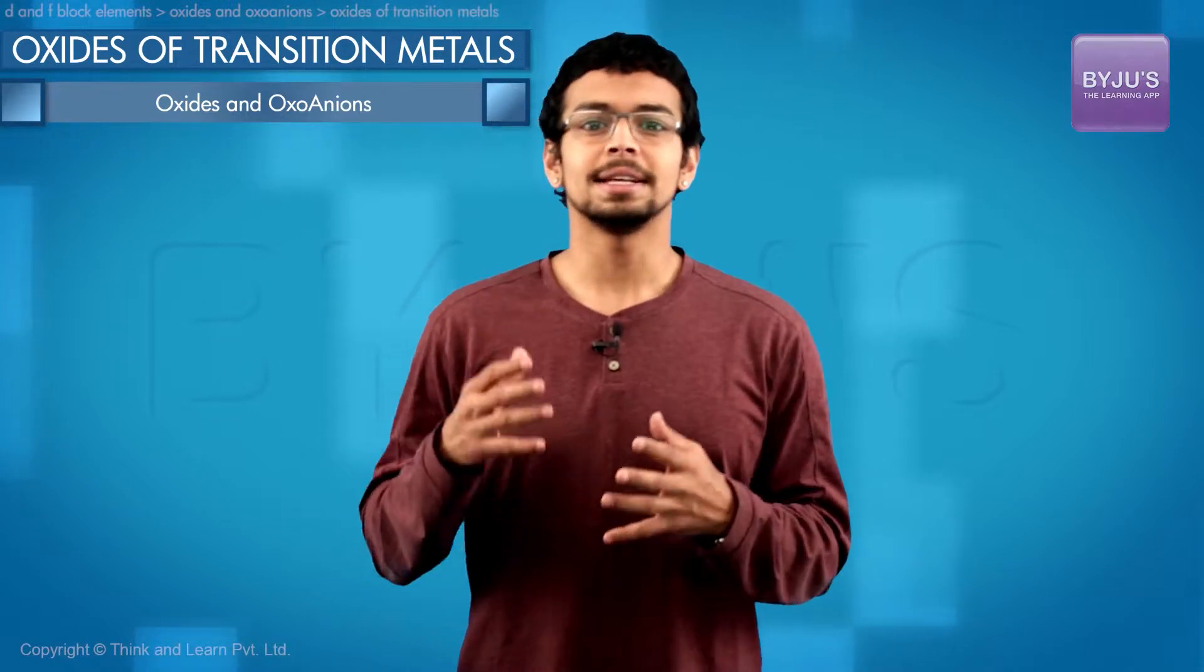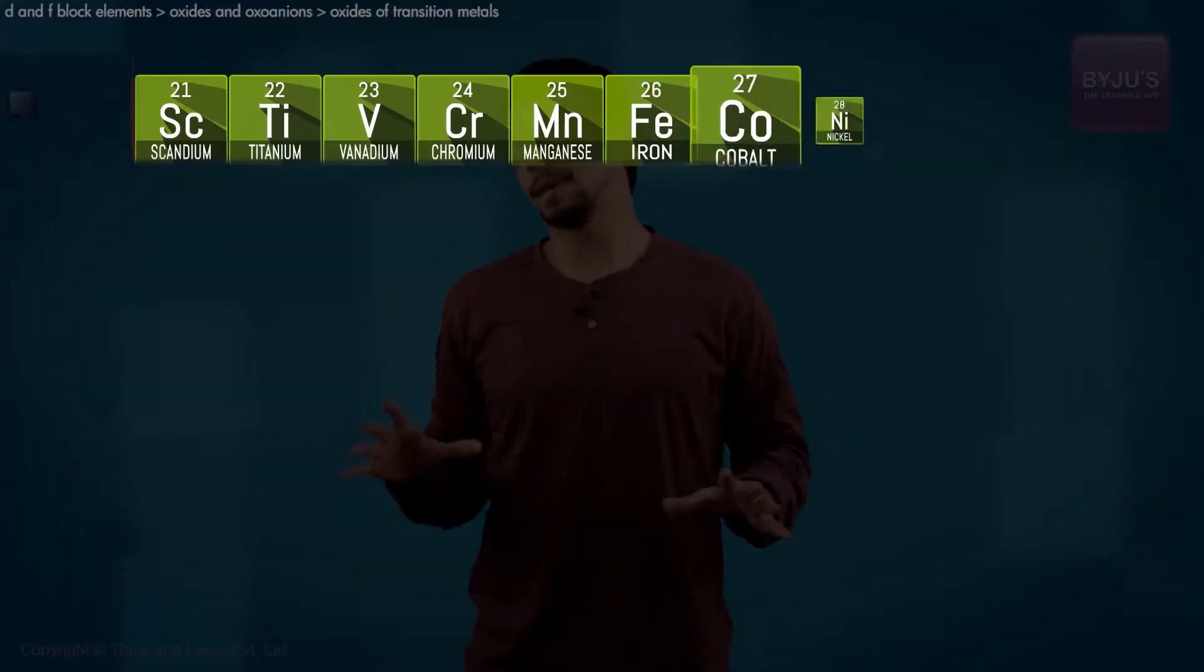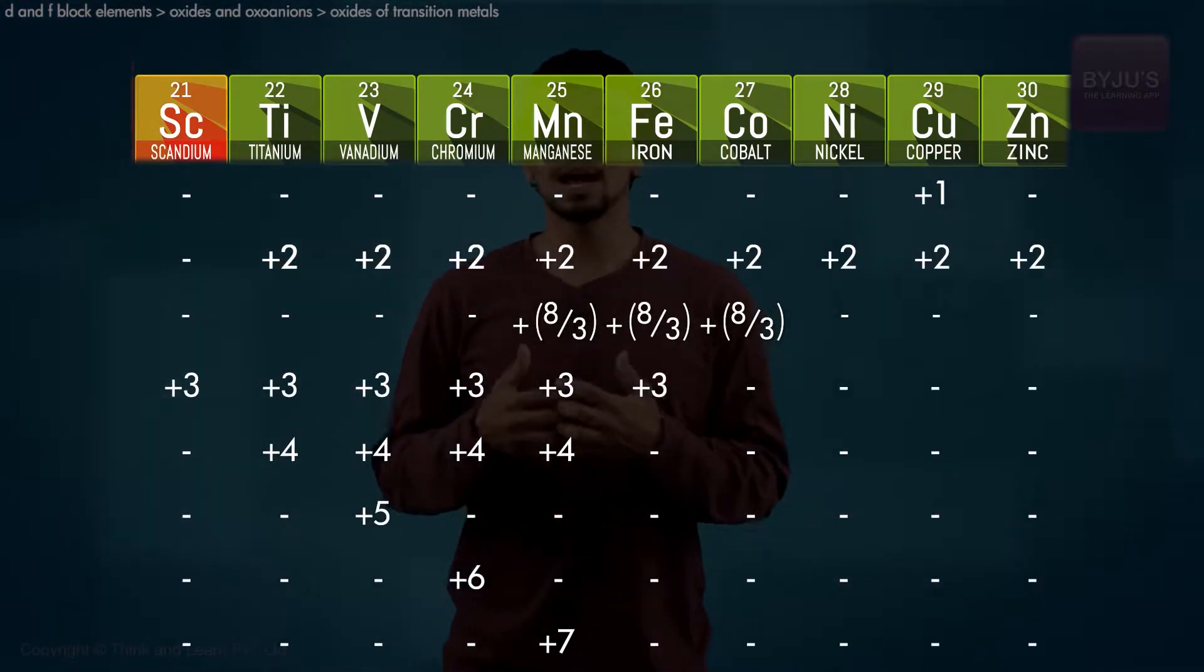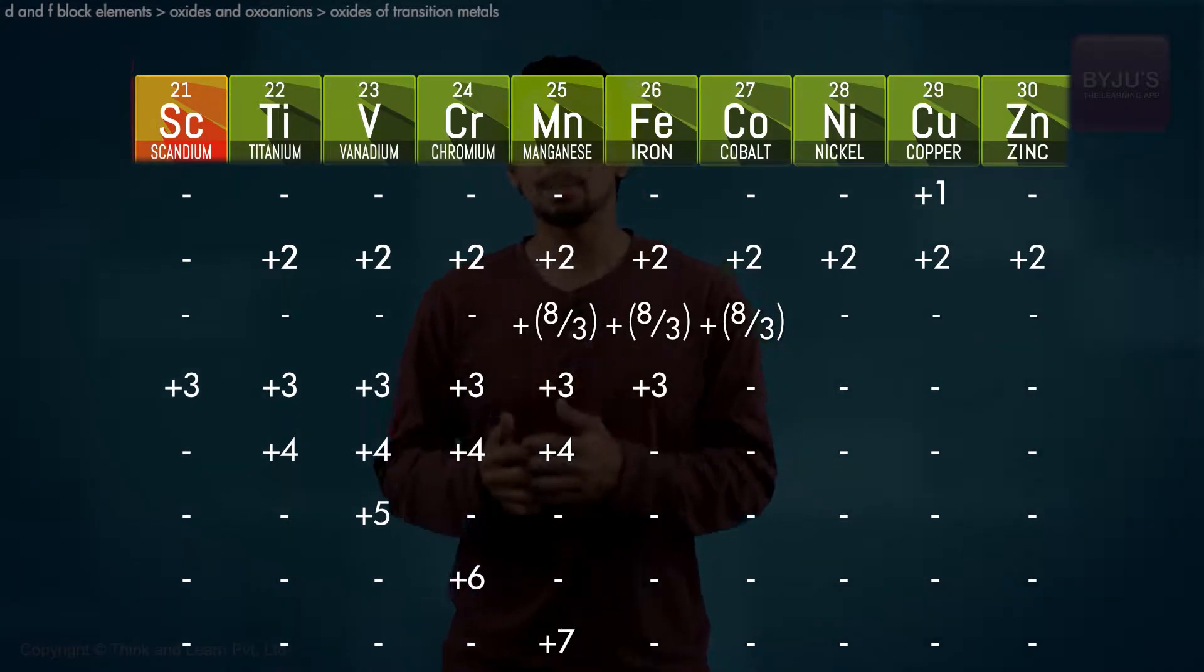Direct reaction of the 3D series elements with oxygen yields oxides of the first transition series metals. All of them except scandium can assume an oxidation number of +2, forming an ionic oxide of the type MO.